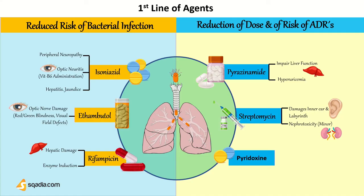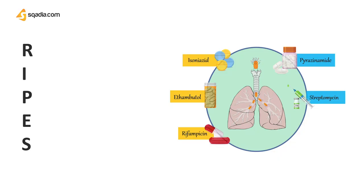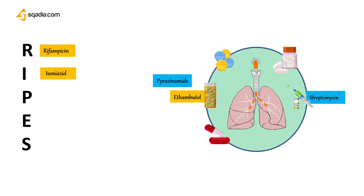You can remember the first-line drugs with the mnemonic RIPES: R for rifampicin, I for isoniazid, P for pyrazinamide, E for ethambutol, and S for streptomycin.